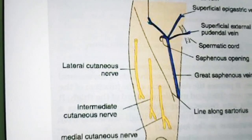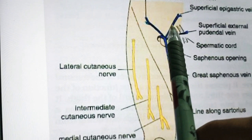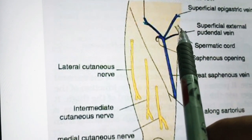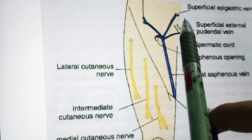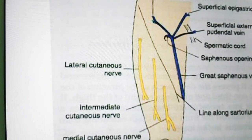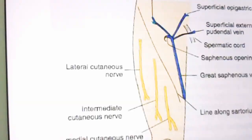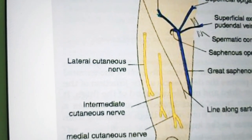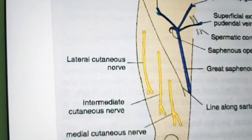The pubic symphysis is formed in the medial plane between the right and left pubic bones. On the right side of the thigh, the pubic symphysis is on the medial side, and similarly on the left. The pubic crest is a short bony ridge between the pubic tubercle and pubic symphysis.